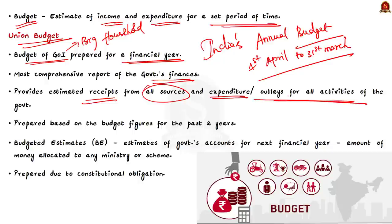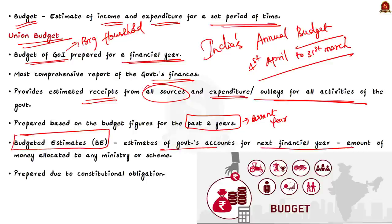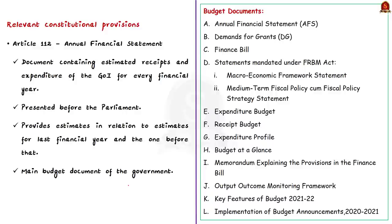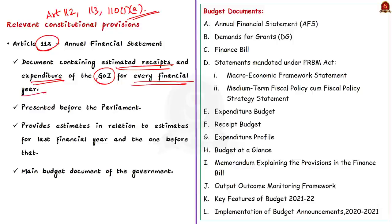This is prepared for the upcoming financial year based on the budget figures for the past two years, giving actual figures for the preceding year along with budget figures and revised figures for the current year. The estimates of the government's accounts for the next financial year are called budget estimates. Budget estimates mention the amount of money allocated in the budget to any ministry or scheme for the next financial year. Now, why is the Union Budget prepared? This is due to constitutional requirements under the Indian Constitution. Three articles assume importance: Article 112, Article 113, and Article 110 Clause 1a of the Indian Constitution. According to Article 112, a document containing the statement of the estimated receipts and expenditure of the Government of India for every financial year has to be presented before the Parliament. This document is called the Annual Financial Statement.